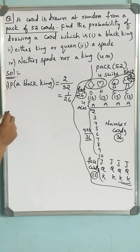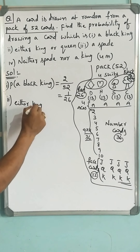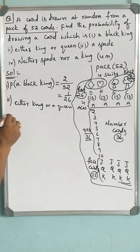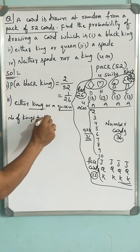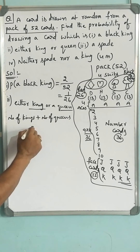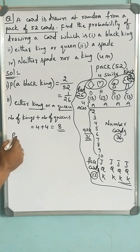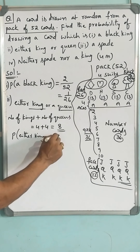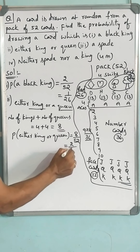Let us go for the second one: either a king or a queen. Let us first count how many kings and queens there are. Number of kings = 4, number of queens = 4. So 4 plus 4 = 8. Therefore, our favourable cards are 8. Probability of either king or queen = 8/52 = 2/13.